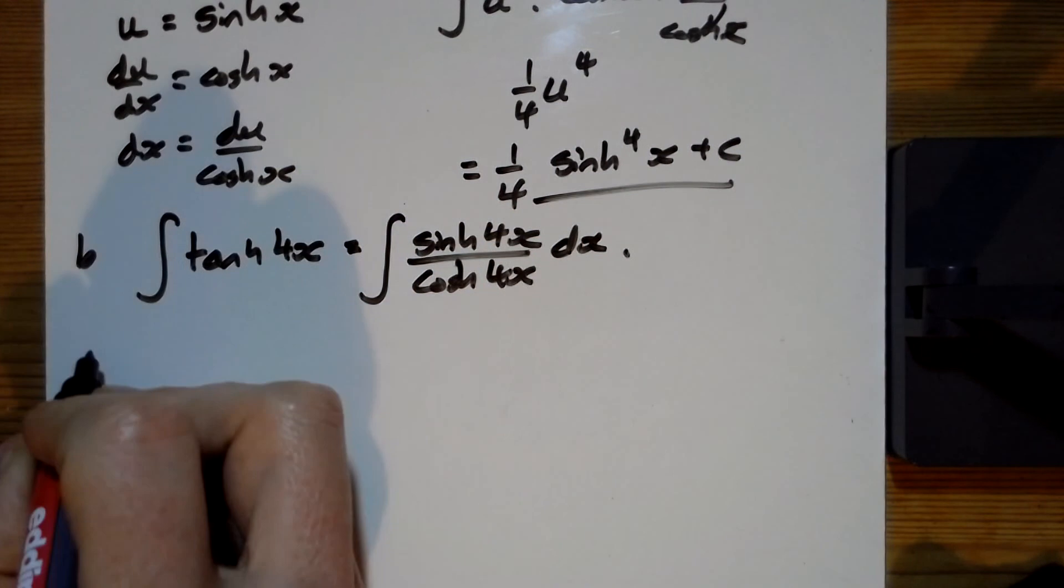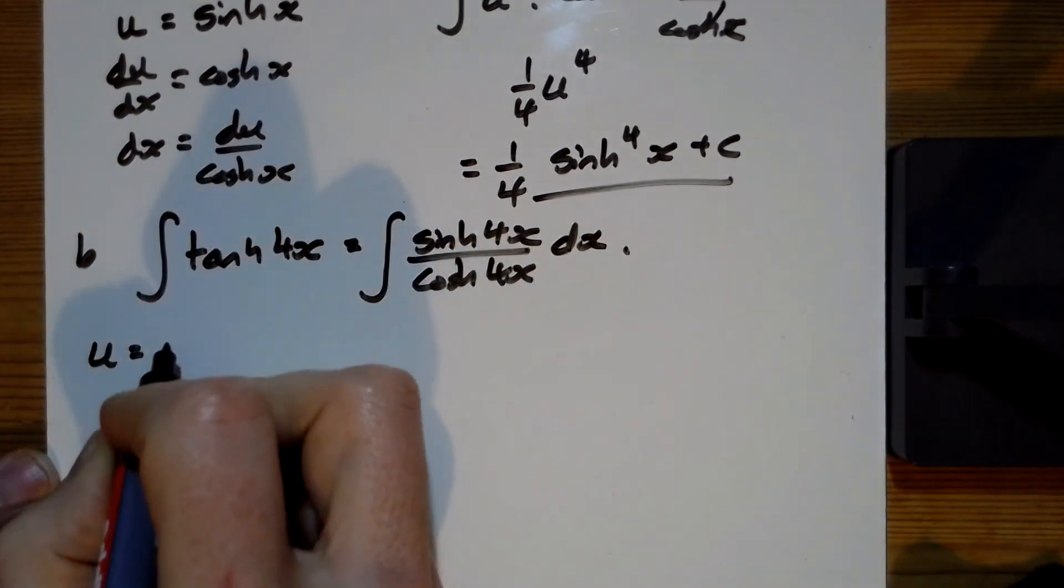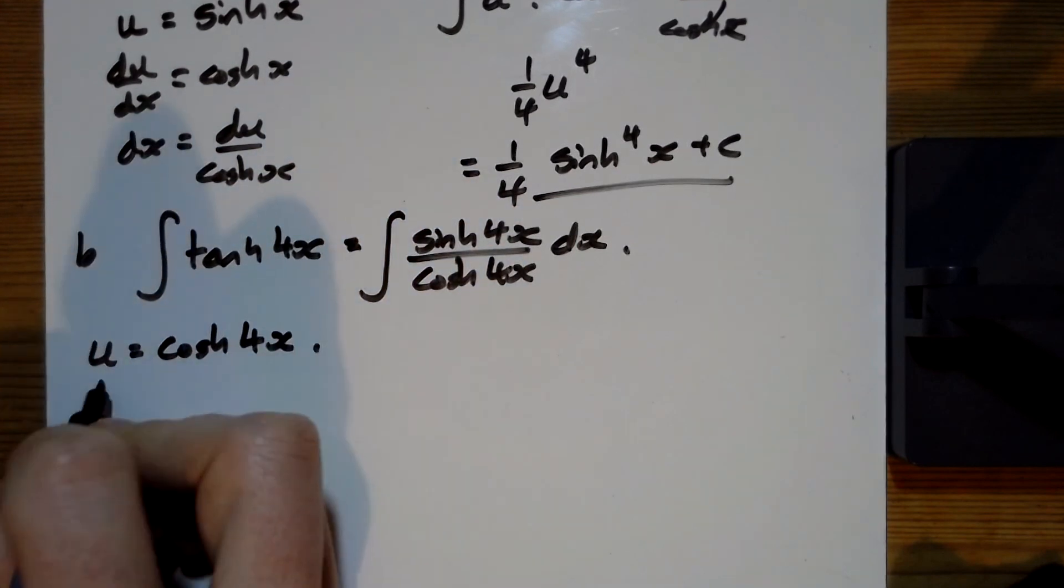And again, we're going to do u equals, I'll do cosh four x this time. u equals cosh four x, so du by dx is four sinh four x,